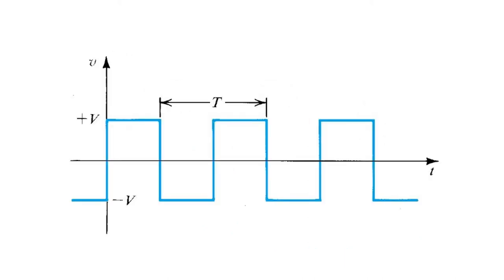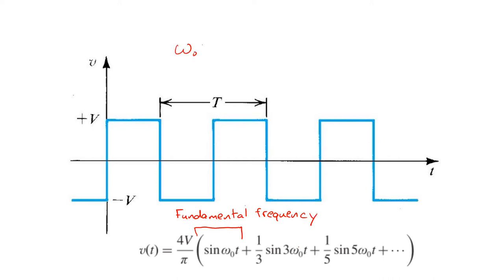Here's another time varying signal of common interest, a square wave. Square wave signals can be written as a sum of sinusoids, as shown here. The lowest frequency component of this Fourier series representation is at the frequency omega naught. This is called the fundamental frequency. And it's related to the period of the square wave, as follows.